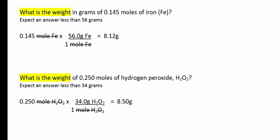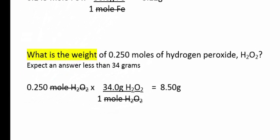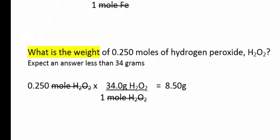What is the weight of 0.25 moles of hydrogen peroxide? The molar mass of hydrogen peroxide is 34. So we would expect an answer less than 34 grams because we are told that we have 0.25 or a quarter of a mole.